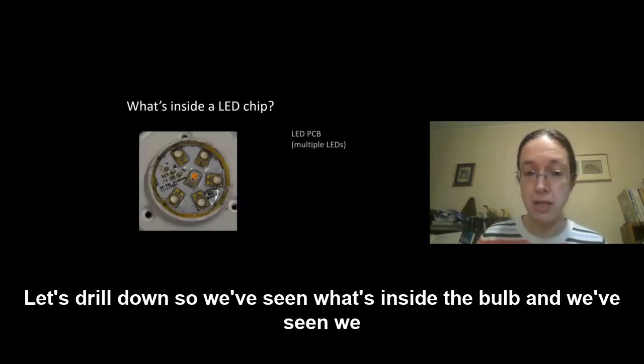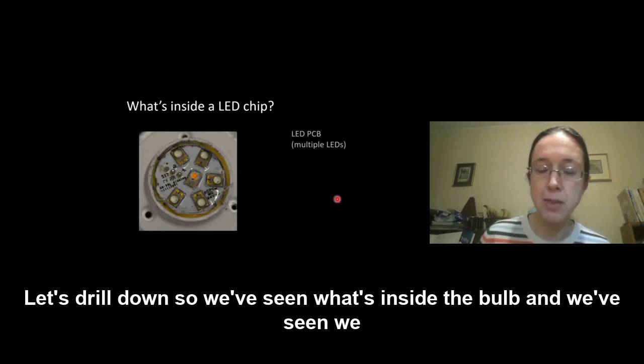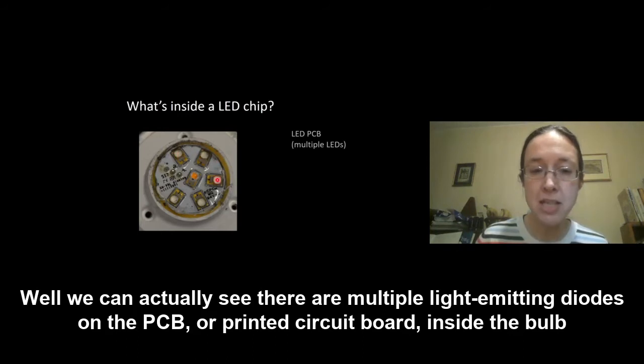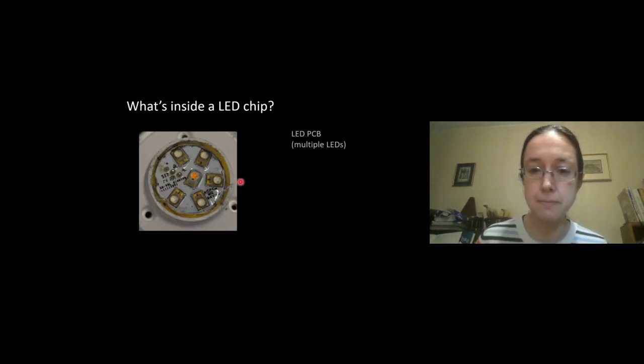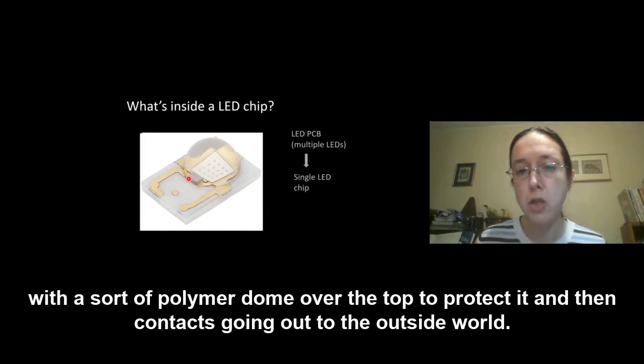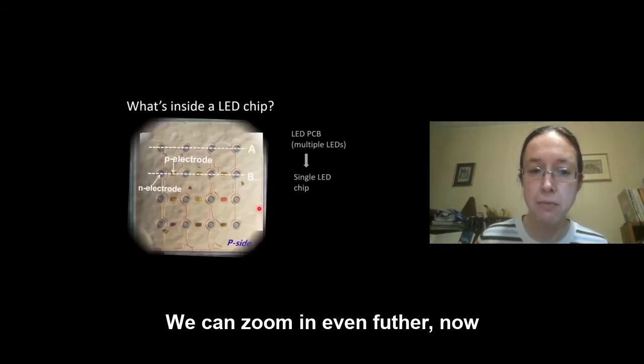Let's drill down so we've seen what's inside the bulb and we've seen we've got these blue emitting LED chips but what's inside those chips? Well we can actually see there are multiple light emitting diodes on the PCB or printed circuit board inside the bulb. And if we zoom in on just one of those this is what we might see. We've got this chip here with a polymer dome over the top to protect it and then contacts going out to the outside world.